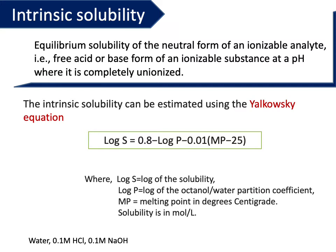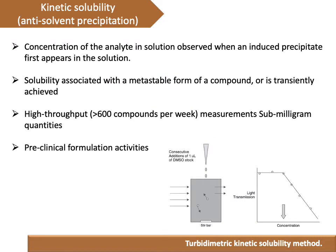If the solubility of a particular compound is the same in all three media, you can say that the compound does not have ionizable groups. However, if the compound is weakly acidic or weakly basic, its solubility will change in different media depending on ionization. The next term is kinetic solubility, also called anti-solvent precipitation. Because equilibrium solubility is time-consuming and requires large quantities, kinetic solubility was introduced for the early stages of drug discovery where quantity is very limited and a high-throughput method that can be completed rapidly is needed.